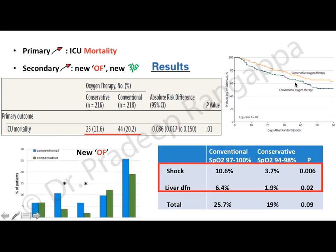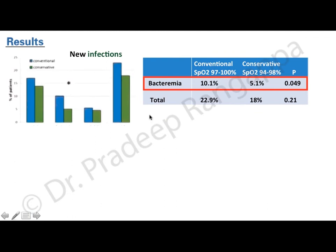Liver dysfunction was more in the liberal oxygen group compared to the conservative group, statistically significant. New infection rates — including bacteremia — were more in the liberal oxygen group, statistically significant. Ventilator-free days were better (higher) in the conservative group compared to the conventional liberal group, also statistically significant.